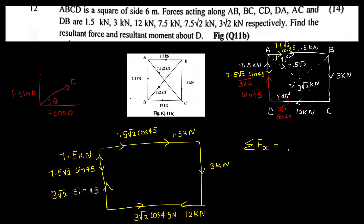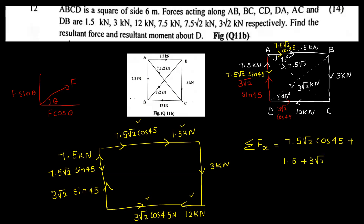Using sign convention: right direction is positive, left direction is negative, upward is positive, downward is negative. Summing horizontal forces: ΣFx includes the components. Taking right as positive and left as negative, ΣFx equals zero. The result is minus 21 kilonewtons on the left side, giving ΣFx = 0.